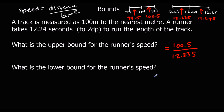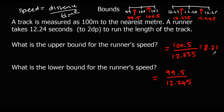For the lower bound of speed, we want the smallest distance divided by the upper time. Typing into the calculator: 100.5 ÷ 12.235 gives approximately 8.21 meters per second to 2 decimal places. The lower bound is 99.5 ÷ 12.245, which gives approximately 8.13 meters per second to 2 decimal places.